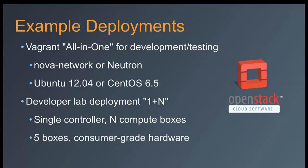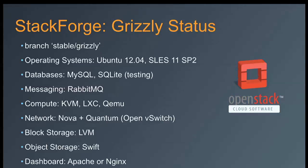For example deployments, we talk about all-in-one for development and testing, either using Nova Network or Neutron with OVS, either Ubuntu 12.04 or CentOS 6.5. Working on adding 14.04 — that's in progress but not yet working. My developer lab that others have been able to recreate is a single controller with several compute boxes, using consumer-grade hardware — cheap stuff from Fry's. For Grizzly, the stable branch is there: Ubuntu and SLES with MySQL, Rabbit, KVM, LXC, Quantum for OpenVSwitch, LVM and Swift, and Apache Nginx.